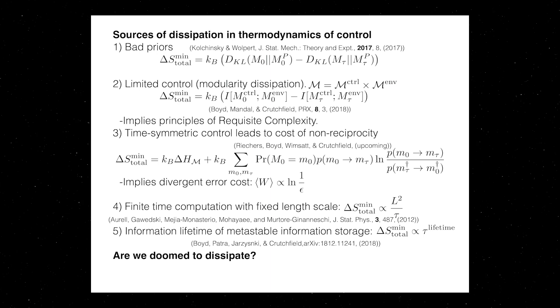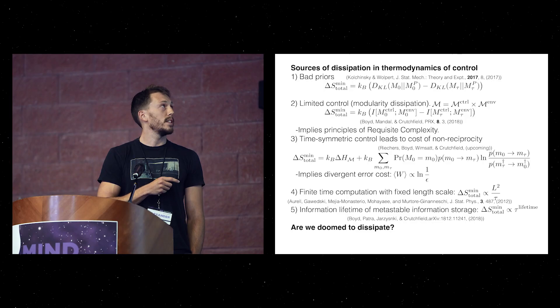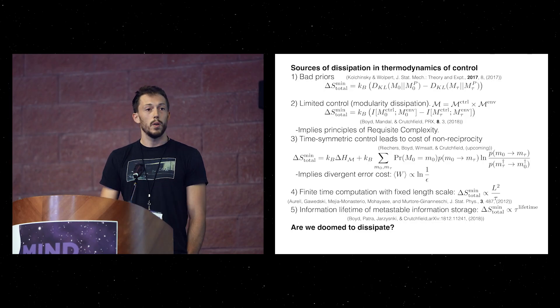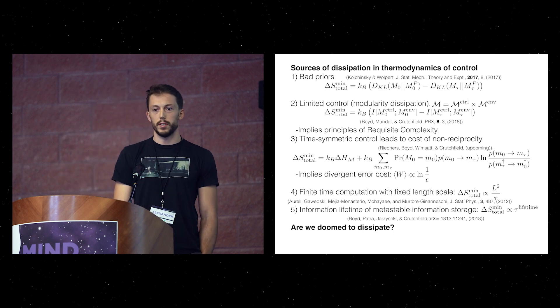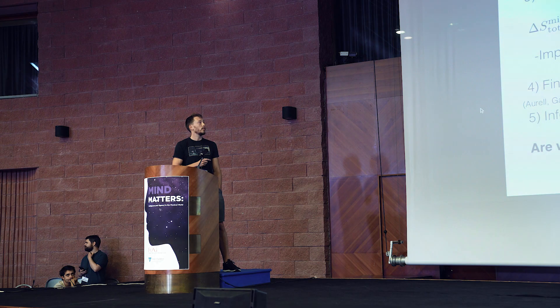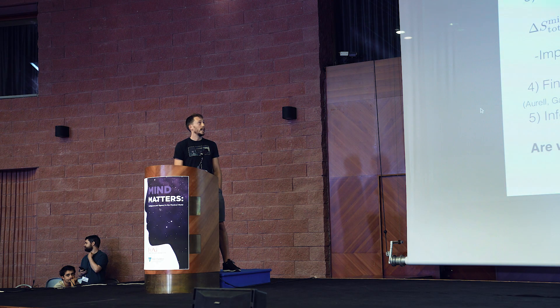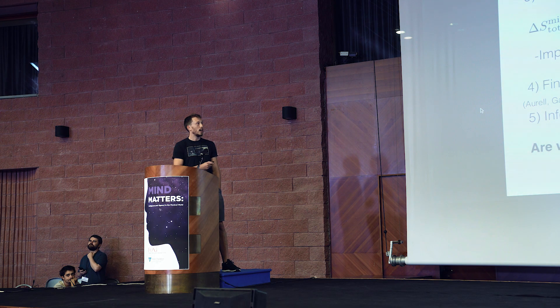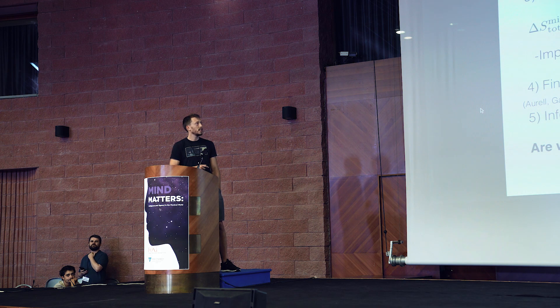One of which David Wolpert already discussed: if you have some sort of computation, you have an anticipated input distribution which constitutes a prior that you have to build into your system. And if your actual distribution differs from that, then the difference in the relative entropies between the initial and final states corresponds to dissipation.